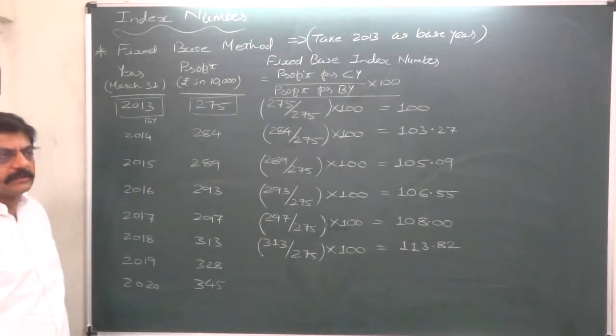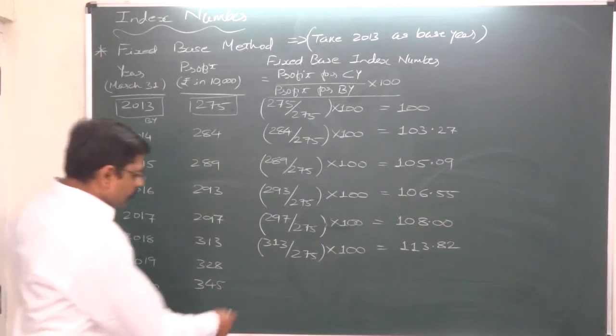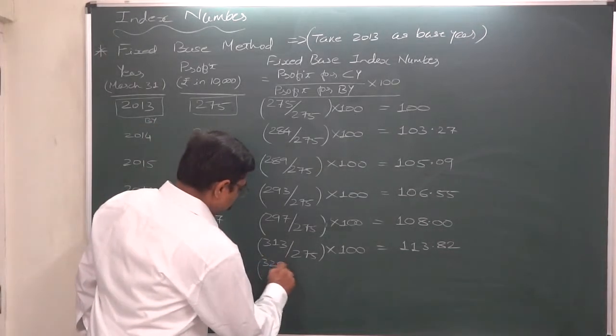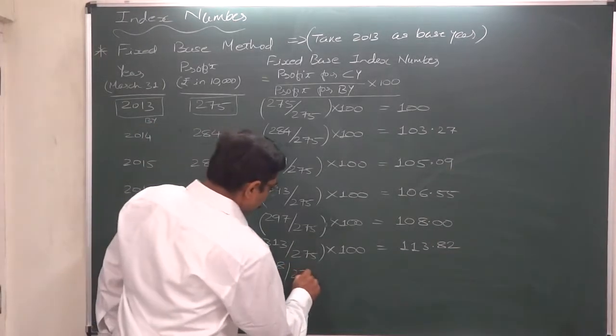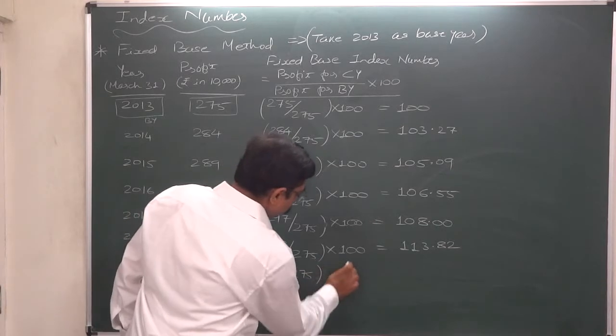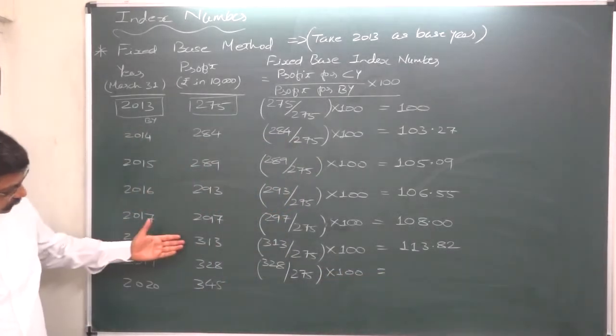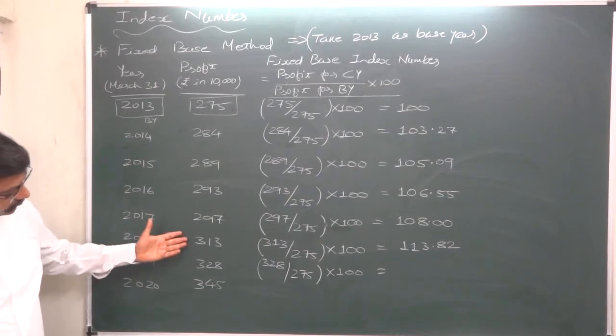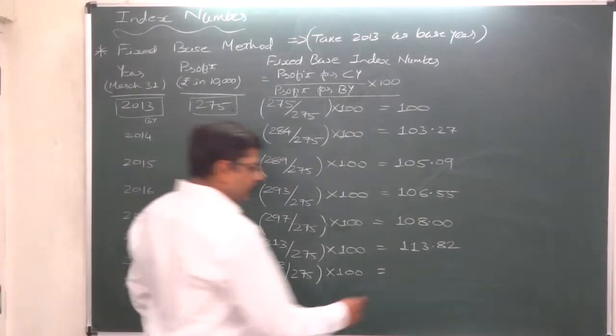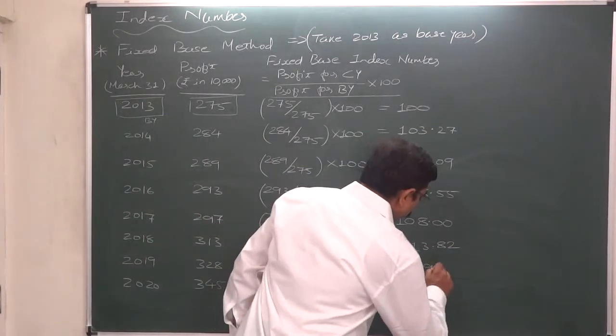So in the year 2018, profit increased by 13.82% as compared to 2013. In 2019, what happens? 328 divided by 275, all into 100. The rate of increasing profit has decreased. It comes to 119.27.